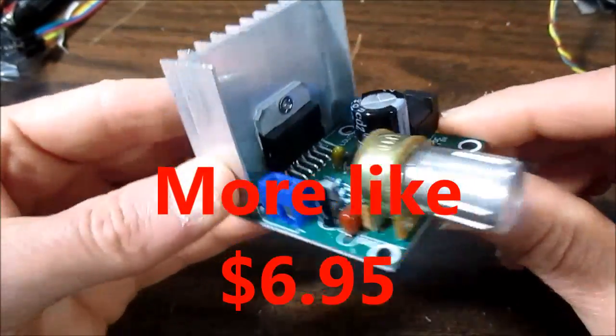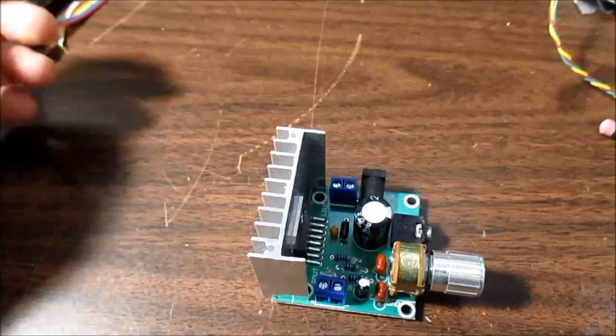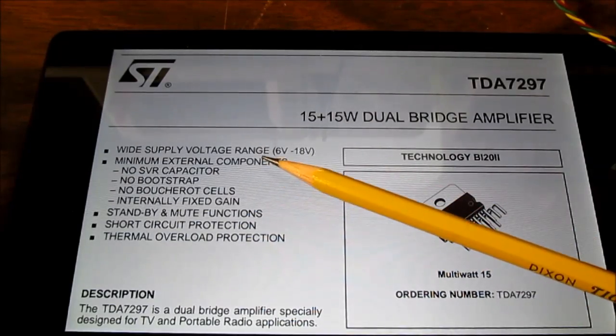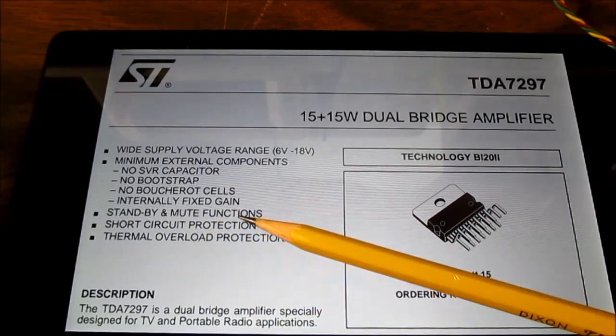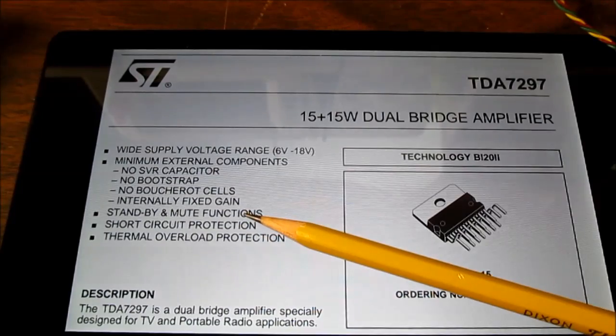Let's take a look at the data sheet for this chip and see what we can expect. Here's the data sheet. Wide supply voltage range, 6 to 18 volts, minimum components, mute and standby functions. That's disabled on this board.